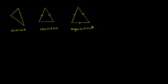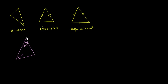Now all of that is review. What I want to think about in this video is: what if we're not given the lengths of the sides, and what if we're just given a few of the angles? So for example, let's say we were given a triangle where this angle right over here is 40 degrees and this angle right over here is 50 degrees. Could you somehow classify this as scalene, isosceles, or equilateral?